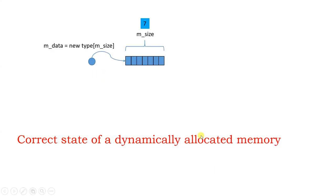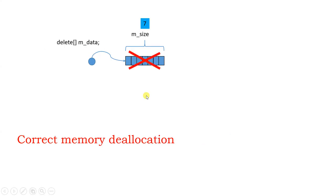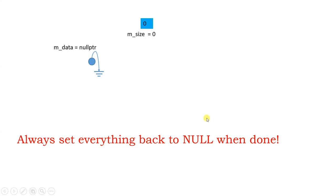You always keep the pointer null and the size at zero. Then you do your dynamic memory allocation, set the size to whatever you have, and make the pointer point to the allocated memory. As soon as you're done, you delete it. You have to make sure you delete the data, and however you created it, you delete it the exact same way. If you allocated one thing, delete one thing. If you allocated an array, delete it as an array. After deleting, always set the pointer back to null — do that obsessively at our stage so you understand why you do it.